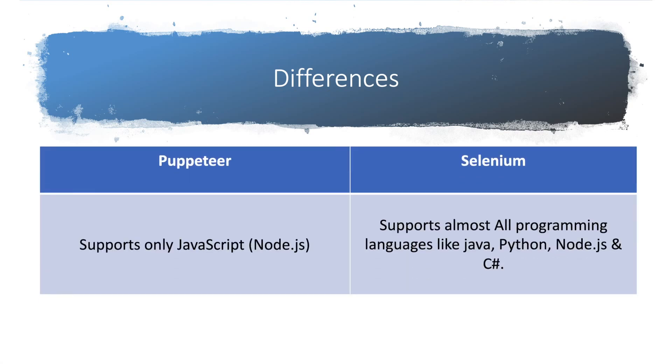Other differences: Puppeteer supports only JavaScript. As it is a Node.js library, you need to use JavaScript. But with Selenium it supports almost all programming languages like Java, Python, Node.js, C#. So you can hire any developer who knows at least one language for Selenium, but for Puppeteer one needs to learn JavaScript.